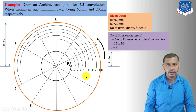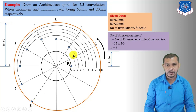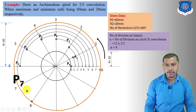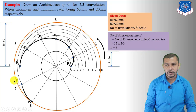Mark the intersection points: P0, P1, P2, P3, P4, P5, P6, P7, P8. Now draw the freehand curve passing through these points to get the Archimedean spiral for 2/3 convolutions.